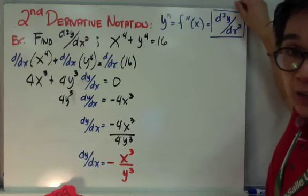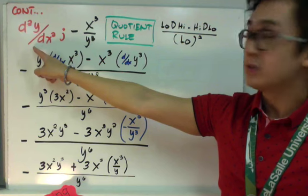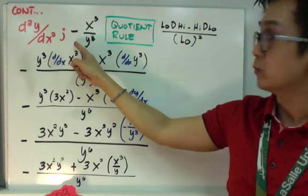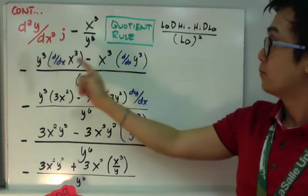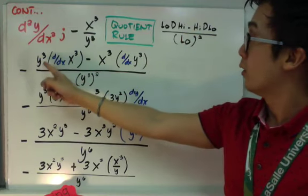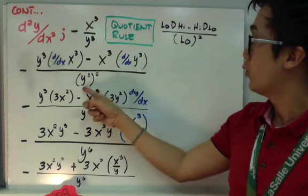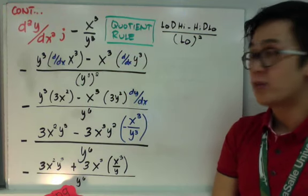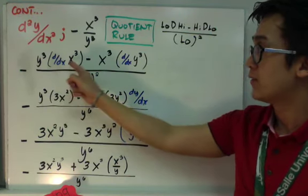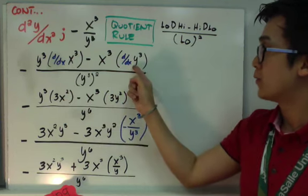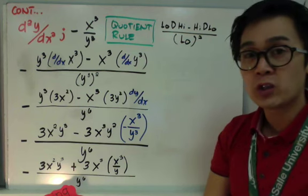So ito yung palang yung first derivative. Kunin natin yung second derivative. Kukunin naman natin ngayon is yung second derivative nung function na negative x³ all over y³. So we can use the quotient rule or 'low d high minus high d low over low low' para kunin natin yung derivative nung function. Using this mnemonic device: low, derivative of high, minus high, derivative of low, over low squared. Pag na-setup nyo yung function nyo, pwede na natin i-simplify. Derivative ng x³ in terms of x is simply 3x². Derivative ng y³ in terms of x is 3y² dy/dx. All over y⁶.